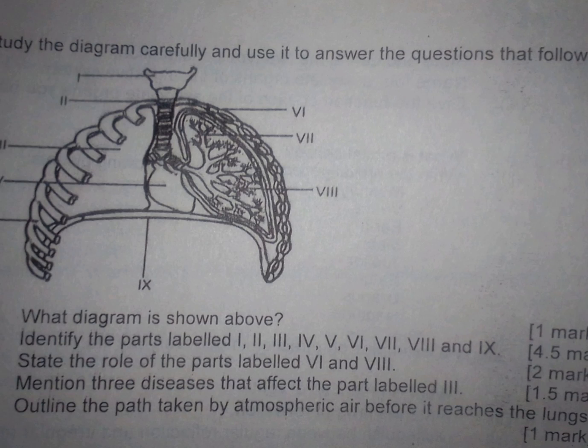IV is the heart, V is the rib, VI is the intercostal muscle, VII is the bronchial, sorry VIII is the bronchial. Then IX is the diaphragm.